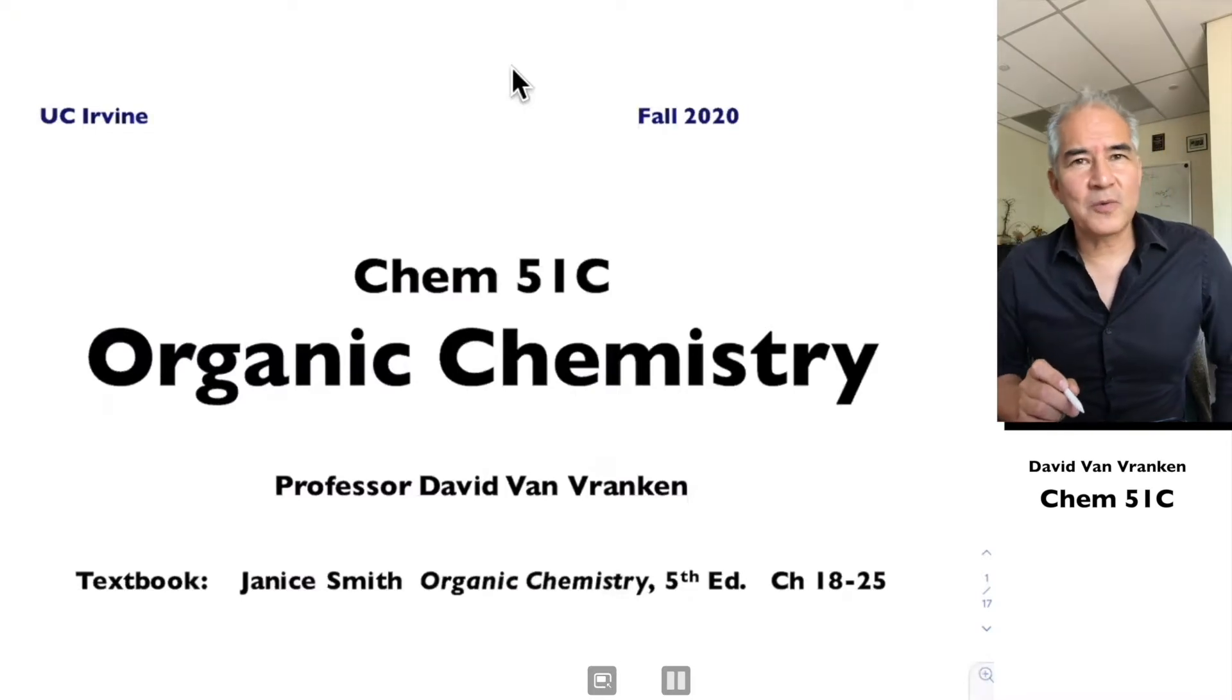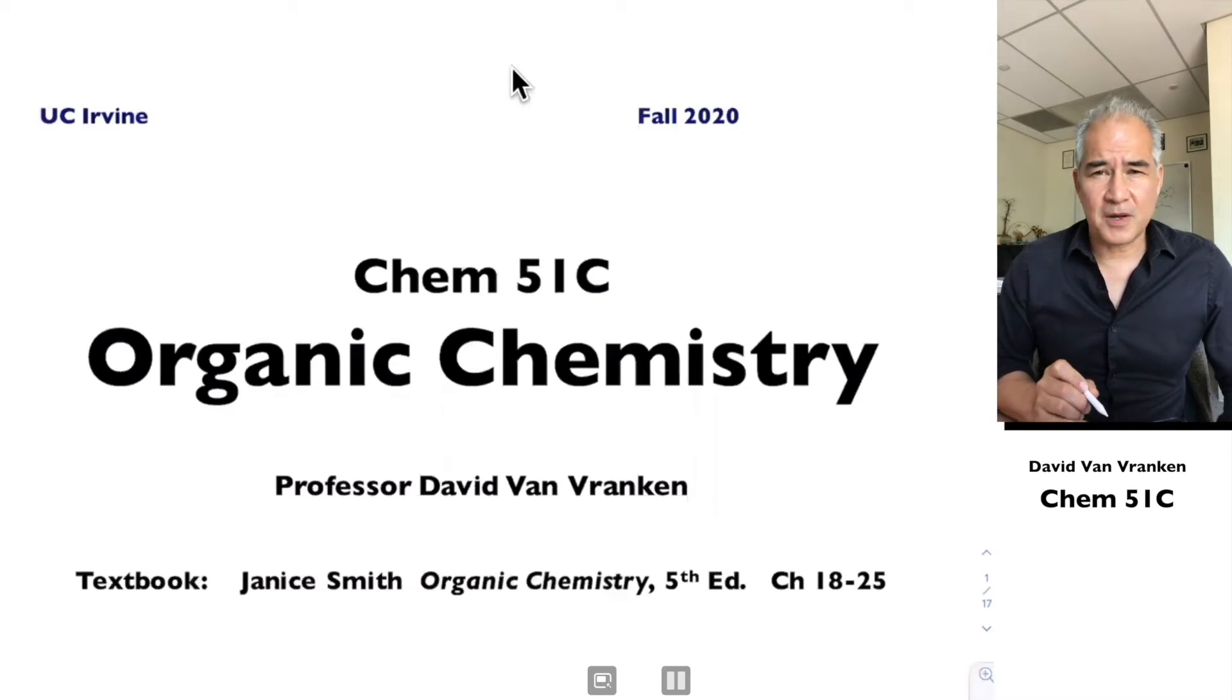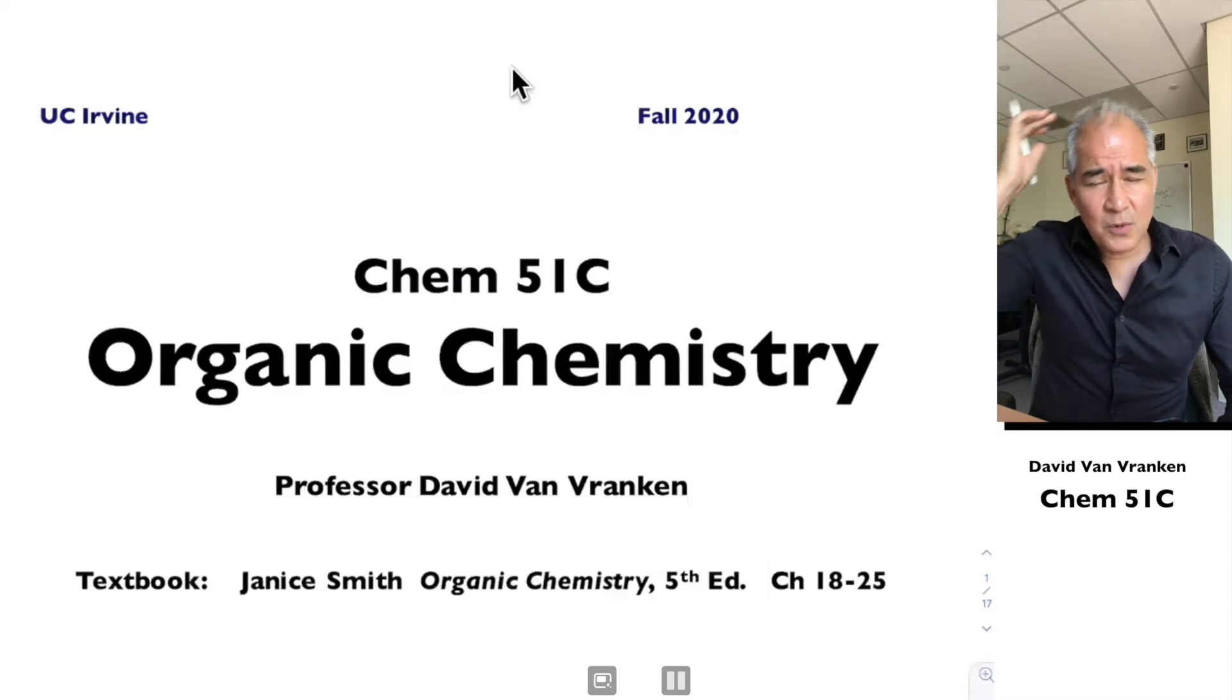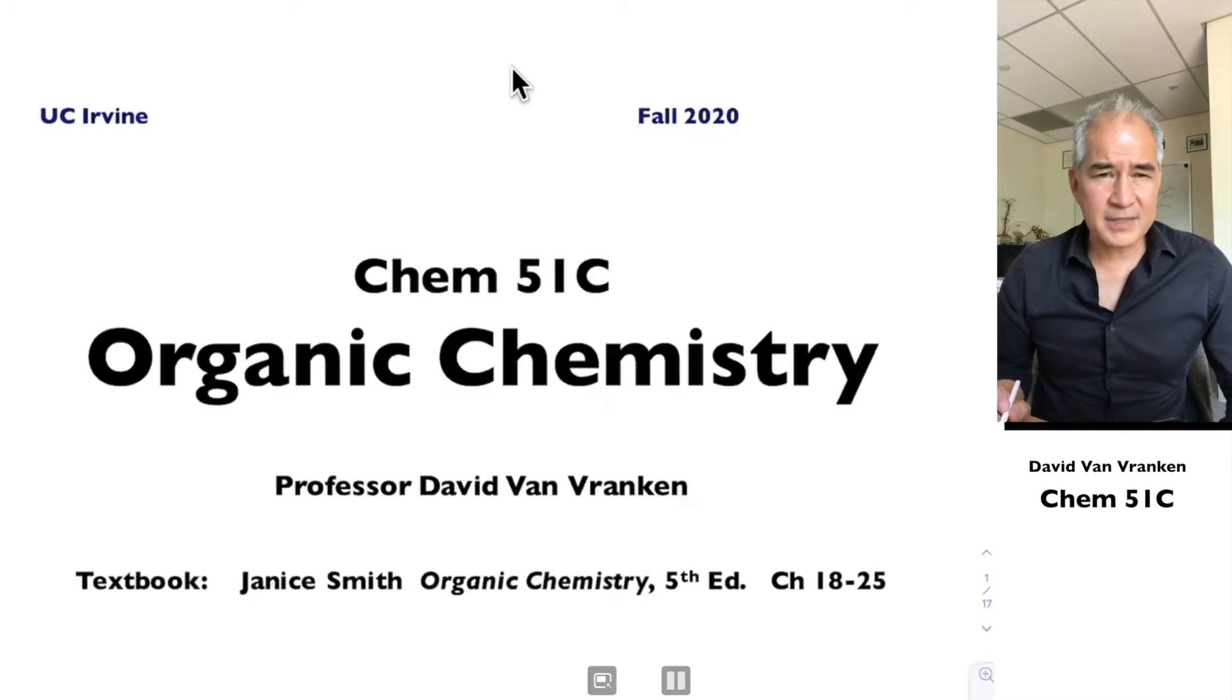This quarter we're going to be using the Gorzinski-Smith textbook in Organic Chemistry, and I am still using the fifth edition because that's what I used in the spring. For those of you who bought the sixth edition, you're welcome to use the sixth edition. They've moved a few of the chapters around. I'll try to make reference to that as we go along. What's inside the chapters is not really that different, and our website has a translation to help you correlate problem numbers.